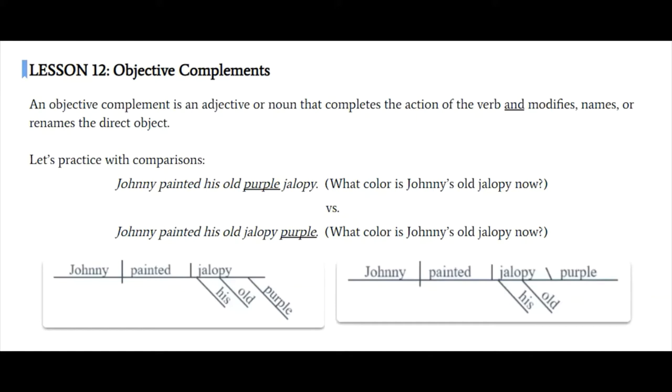And here we diagram the first version. Johnny painted what? Painted jalopy. That's the direct object. Whose jalopy? What kind of jalopy? Old jalopy. What kind? A purple jalopy. So these are all adjectives.